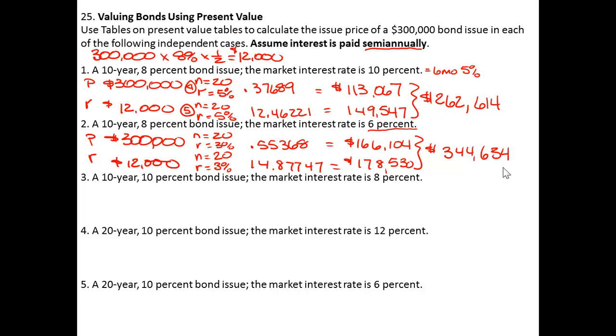In 3, 4, and 5, notice it's a 10% bond, so $300,000 paying 10% every half year means that the payment, the cash payment would be $15,000 instead of $12,000. So the principal is still $300,000, but the interest now is $15,000 because it's a 10% bond. And that's true in each of these 3, 4, and 5.